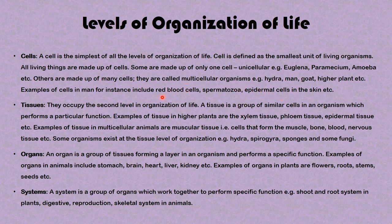Moving to the next level, we are going to look at tissues. Tissues occupy the second level in the organization of life. A tissue is a group of similar cells in an organism which performs a particular function. Examples of tissue in higher plants are the xylem tissue, the phloem tissue, the epidermal tissue, and so on. Examples of tissue in multicellular animals are muscular tissues — that is the cells that form the muscle — bone, blood, nervous tissue, and so on.